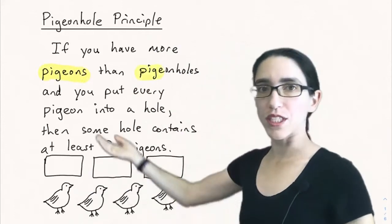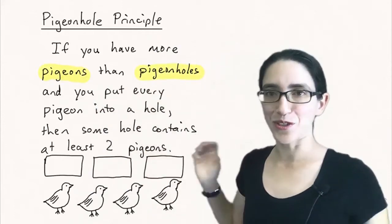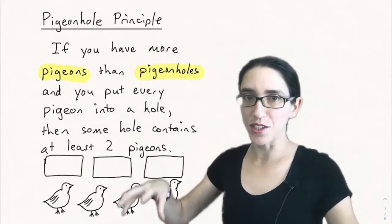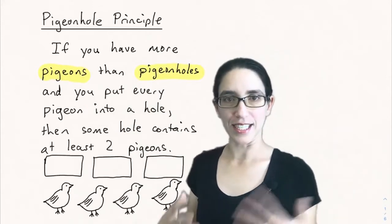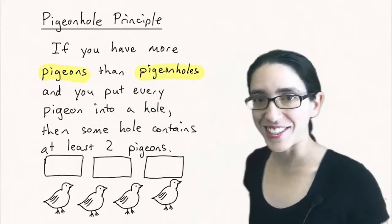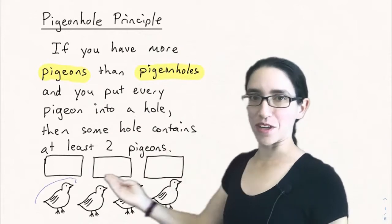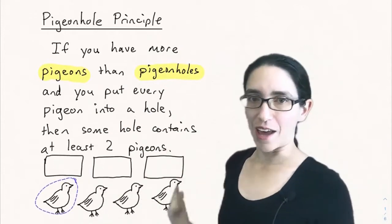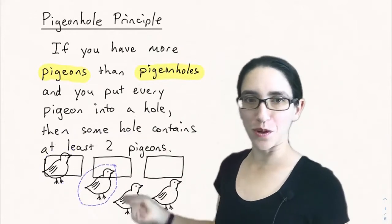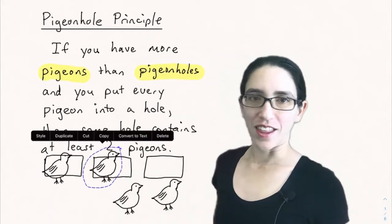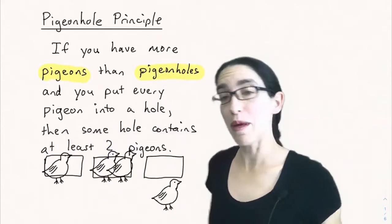The pigeonhole principle says that if you have more pigeons than pigeonholes and you try to put every pigeon into a hole, then some hole has to contain at least two pigeons. For example, if I have three holes and four pigeons and I try to put each pigeon into a hole, then we're going to be forced to have two pigeons sharing a hole.